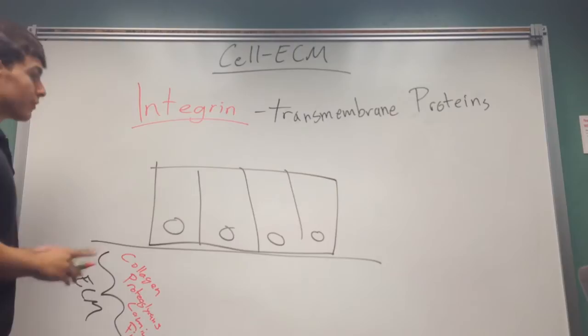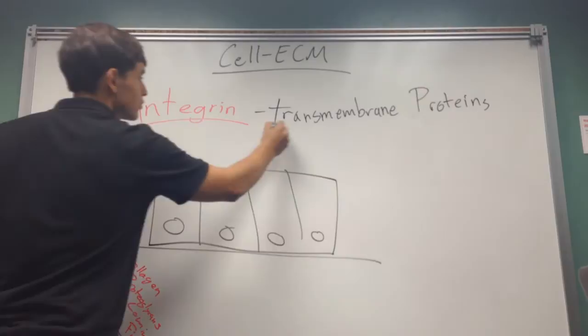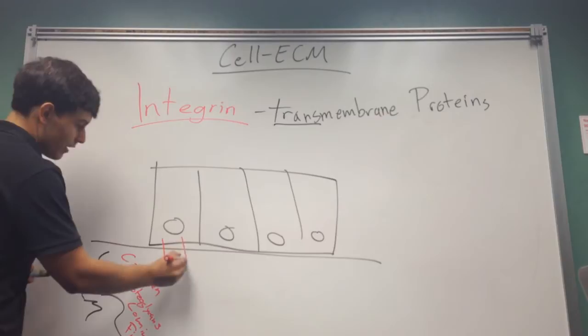So, these integrins are transmembrane, meaning they are on the membrane, and that they are on both sides, so that's where the trans is. We are going to color them in red, they extend to both sides of the membrane, so they can stick out and interact with stuff that's inside the ECM.